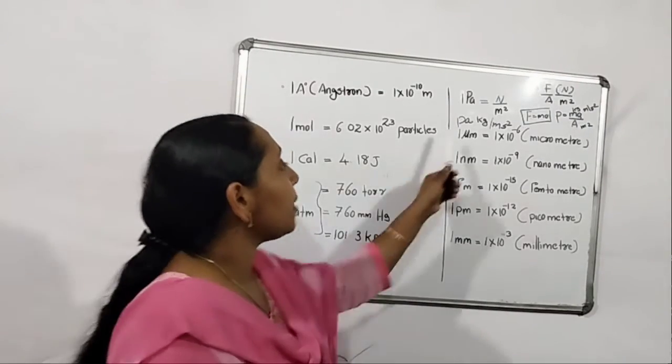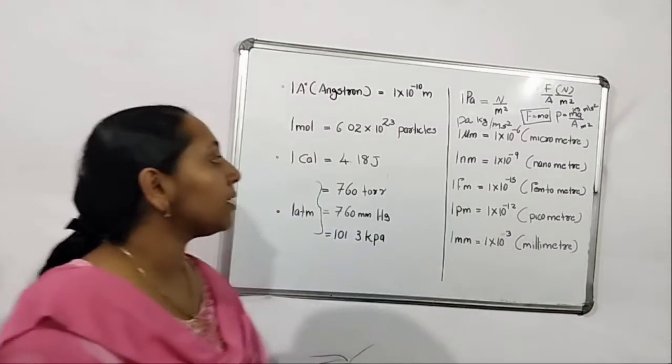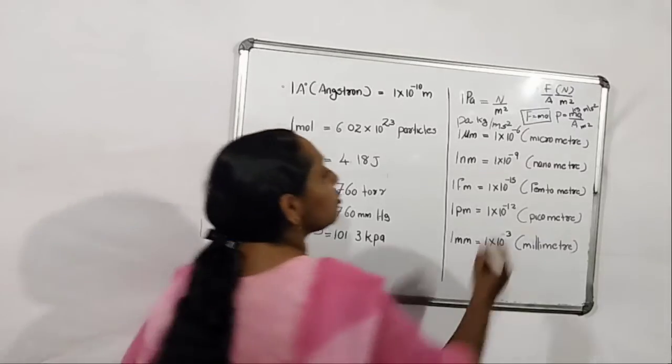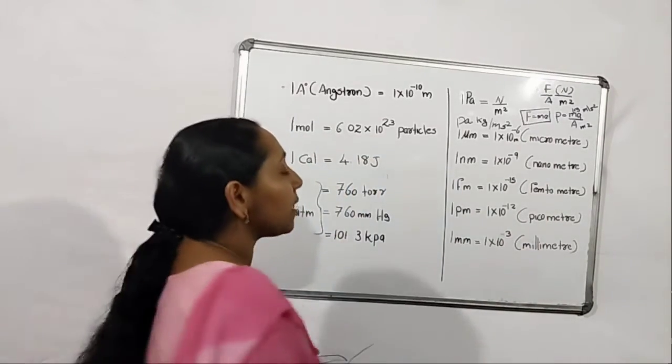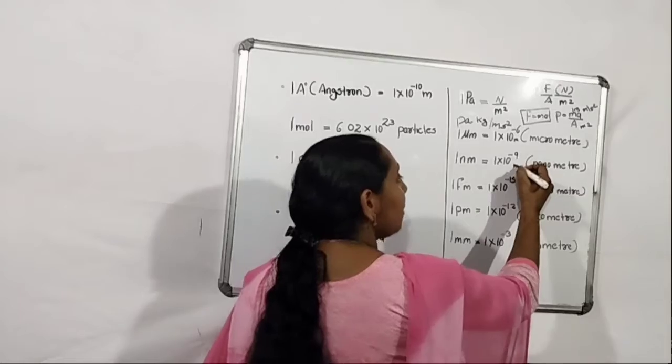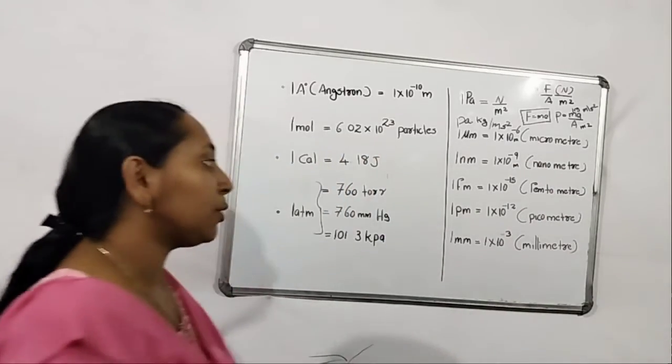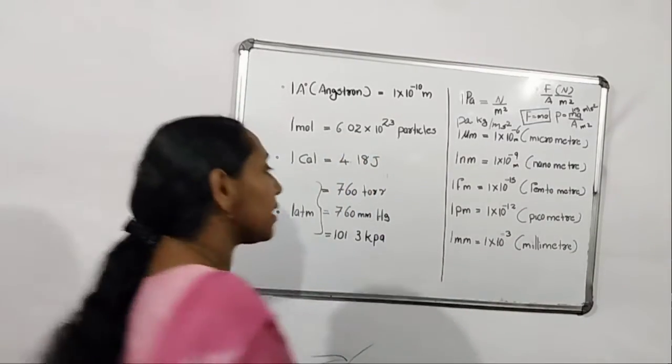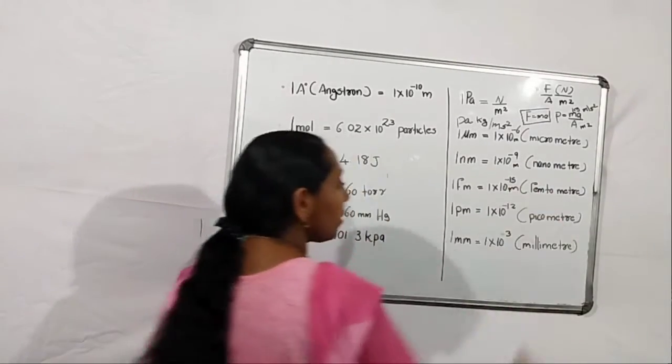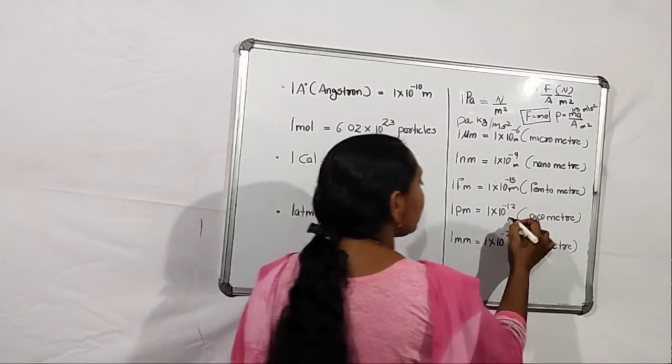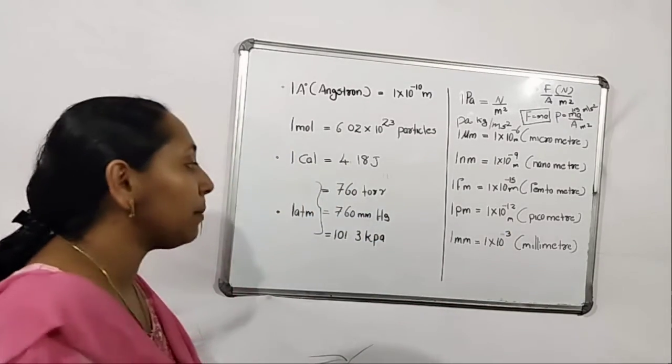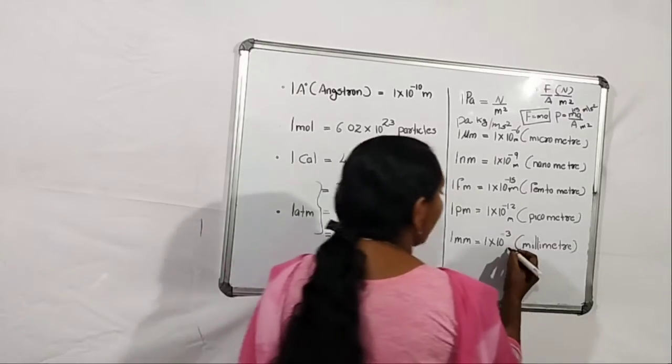Next one, 1 micrometer means 1 × 10^-6 meters. 1 nanometer means 1 × 10^-9 meters. 1 femtometer means 1 × 10^-15 meters. And 1 picometer means 1 × 10^-12 meters. And the last one, 1 millimeter means 1 × 10^-3 meters.